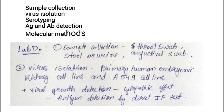Sample collection: since adenovirus infects the respiratory tract and GIT, we collect throat swab, stool, urine, and conjunctival swab. For virus isolation, we use the primary human embryonic kidney cell line and the A549 cell line. Viral growth is detected by cytopathic effect; antigen detection uses the direct immunofluorescence test.